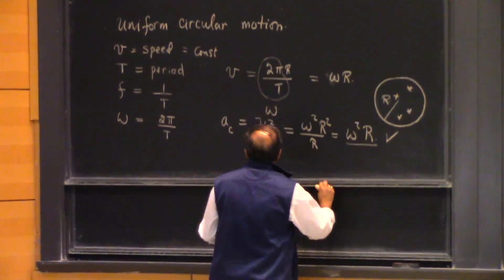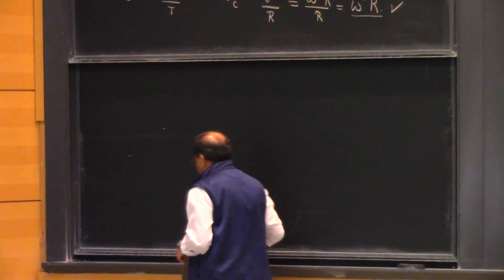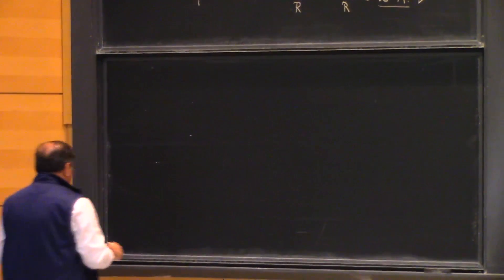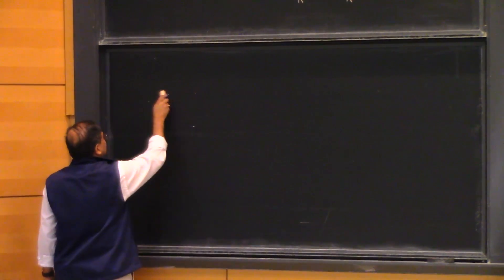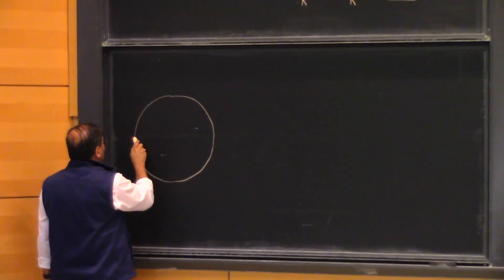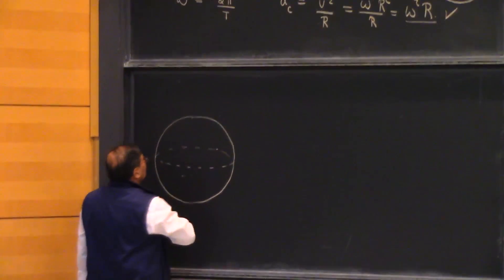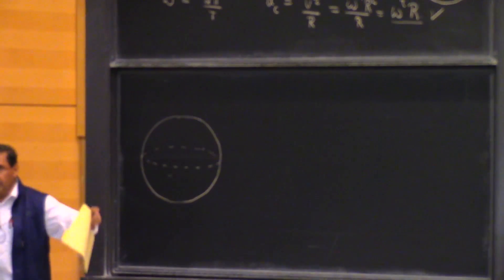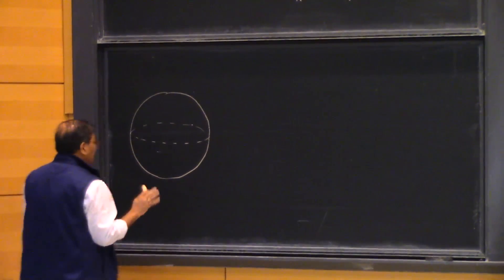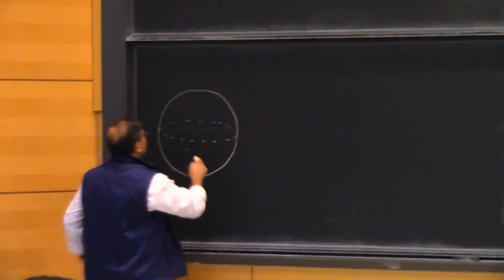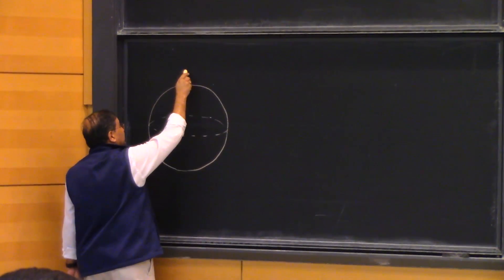Let's calculate the centripetal acceleration we experience on Earth's surface. Earth is not really a sphere — it is an oblate spheroid — but we'll assume a sphere. The Earth is rotating about an axis at angular speed ω = 2π/T. The period T of Earth's rotation is 24 hours, which is 24 × 3600 seconds.